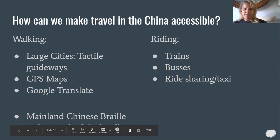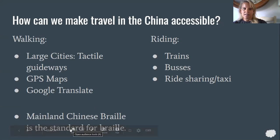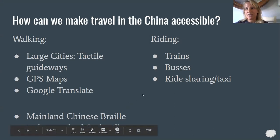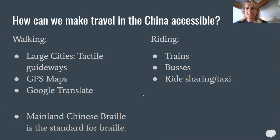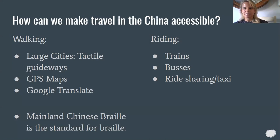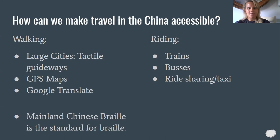Grace asks what BlindSquare is — it's a GPS app. There's a free version right now, and it's normally a paid app. It tells you exactly how to get somewhere using your phone to find out where you are and where you need to go. So if you wanted to go to a certain restaurant in China, you could type in your location and it would tell you exactly how to walk there. You could also connect to wi-fi in different locations, download maps and directions — you might need to buy a SIM card. These are things to think about ahead of traveling.